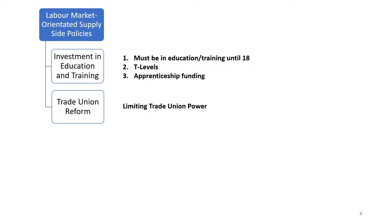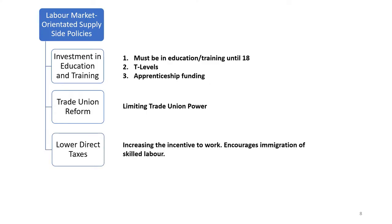Secondly, trade union reform. In the past, trade unions were often criticised for resisting changes to working practices that would have brought increased labour productivity. For example, frequent strike action over wages and new technological changes meant workers weren't as productive as they could have been. By limiting trade union power, as was done during the Thatcher administration in the 1980s, new changes brought less disruption to production, fewer strikes, and therefore labour productivity increased.